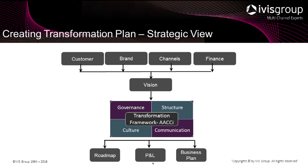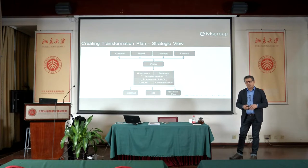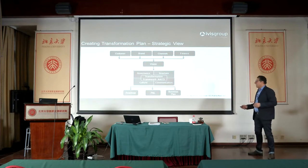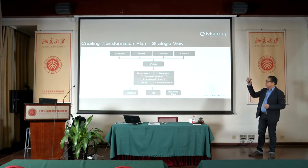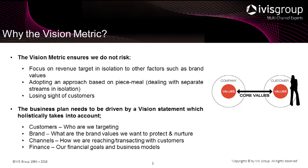Once that vision is clear and communicated, you can go about transformation on the right foundation. The result will be a clear roadmap — typically three to five years — a common P&L which all departments can subscribe to and agree on, and a business plan for how to actually execute it. That's what we're trying to achieve in spelling out the vision.